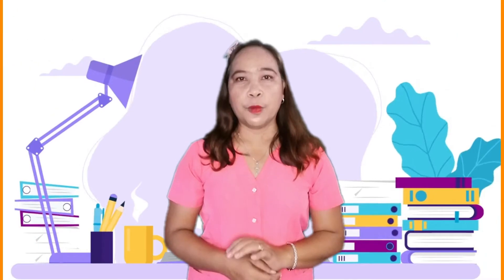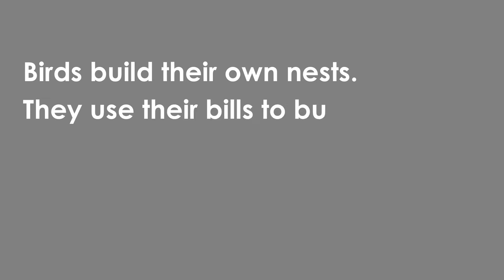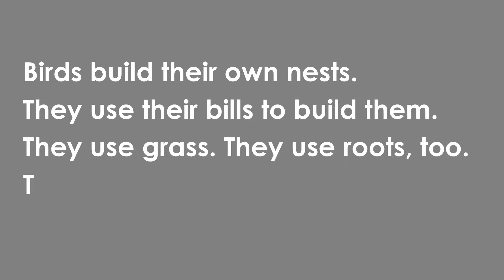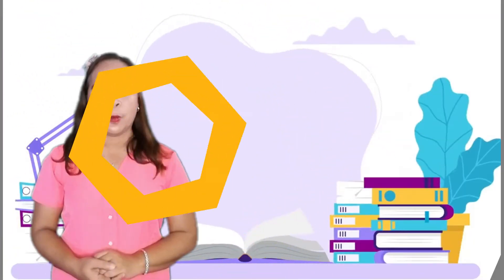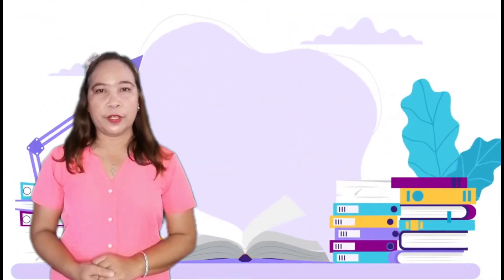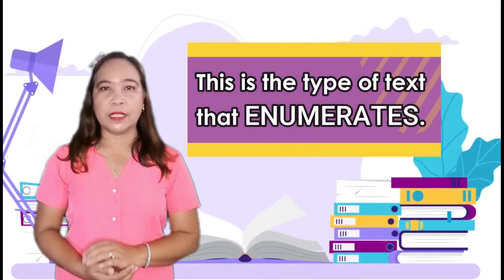Kids, I want you to read the text on your TV screen. Identify what type of text is presented here. Let's read after the beat. Birds build their own nest. They use their beaks to build them. They use grass. They use roots too. They use soft things in their nest. Kids, what type of text is presented here? Correct! This is the type of text that enumerates.